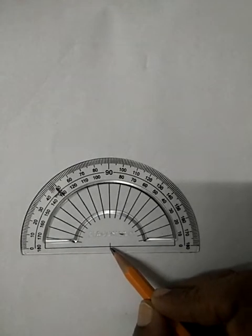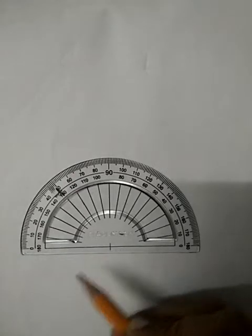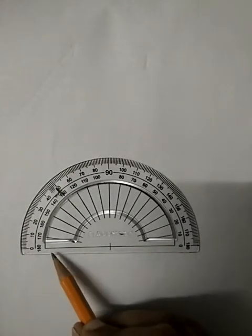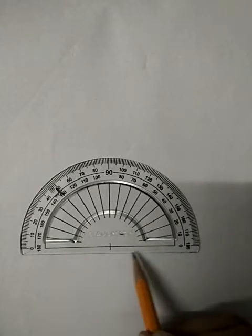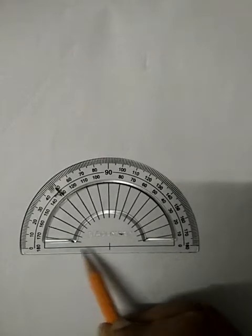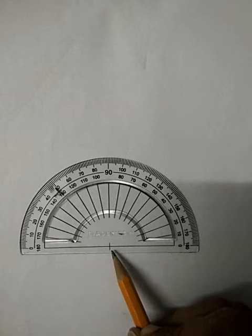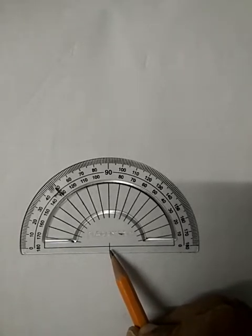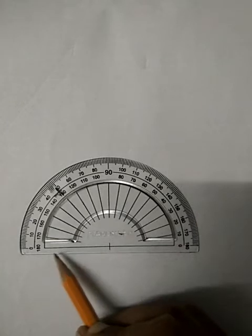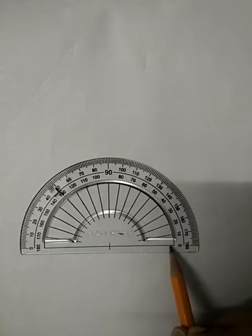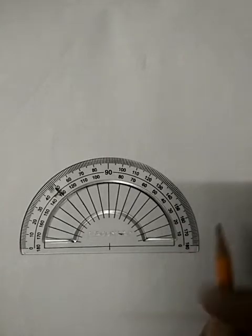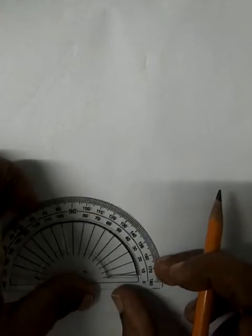Yeh important hai. So sab se pehla kya important hai? This middle point. You will remember number one, yeh middle point. Number two is this line. Do you see the line? So two things you have to be careful. One is this middle point and the other is this line. Yeh wala sidha wala jo line hai. Now yeh do no ke baad, hum look karenge protractor ke side mein. Side mein kuch numbers hai.